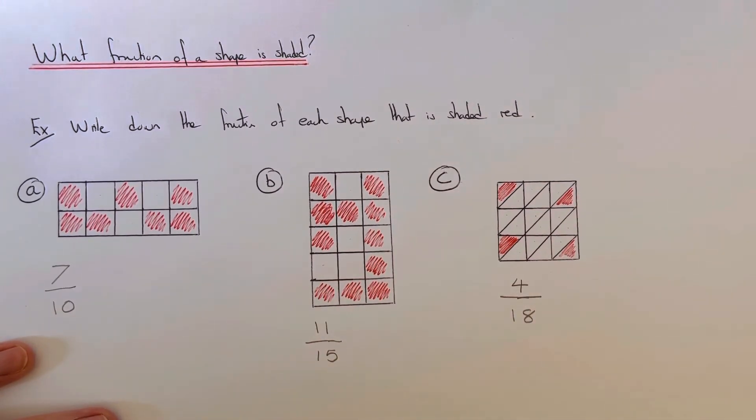Now you may notice on this final example, we can simplify the fraction because four and eighteen are in the two times table. So this means we can divide the numerator and denominator by two.